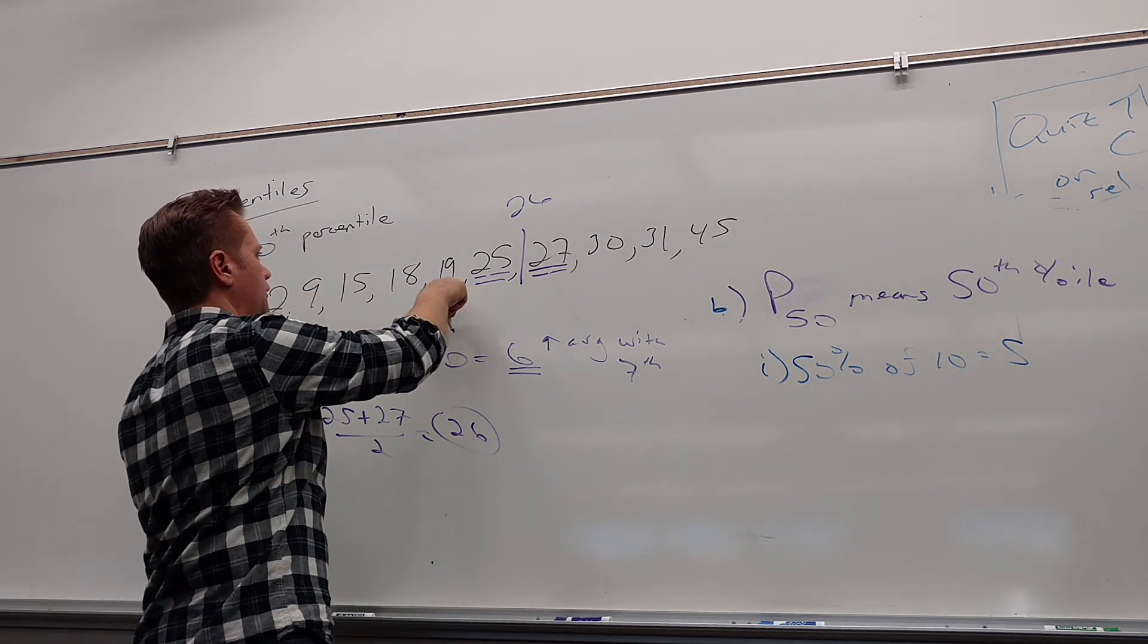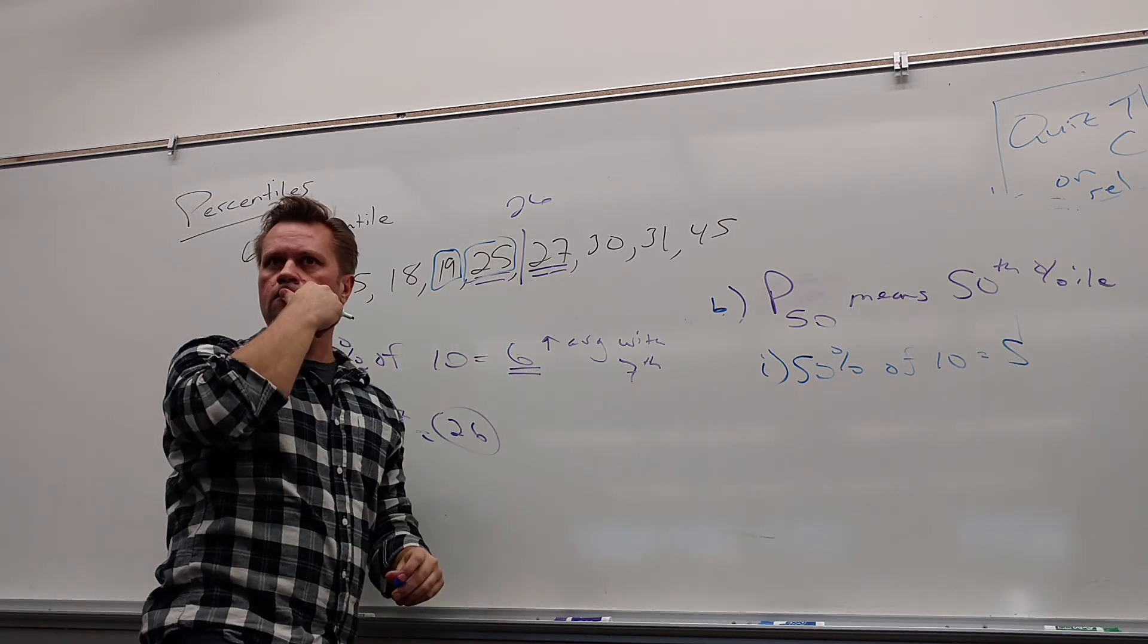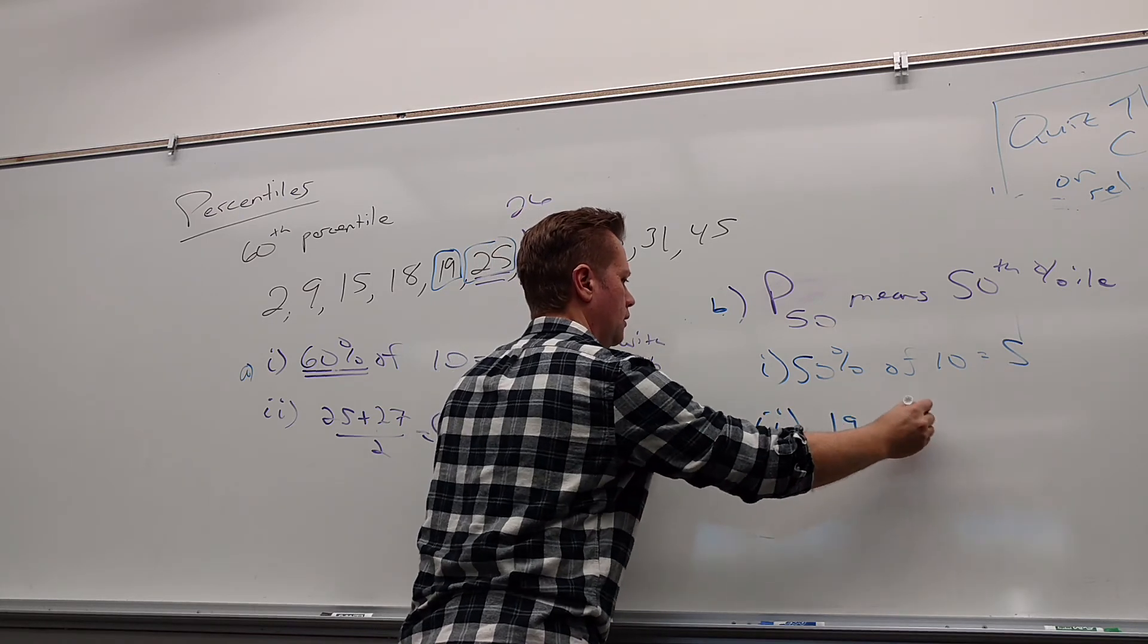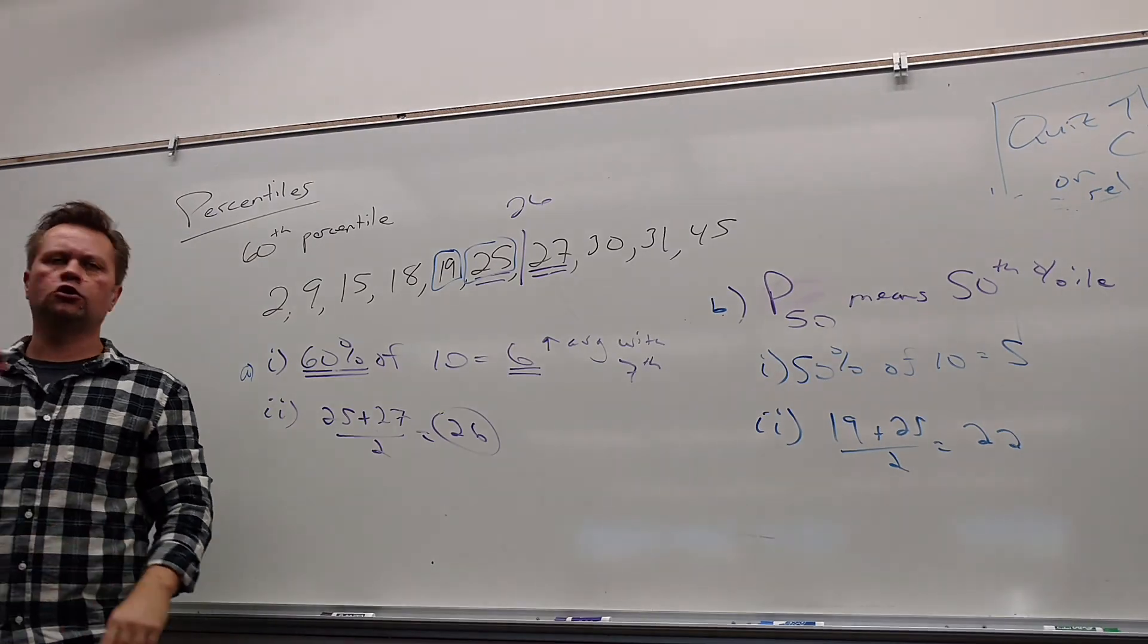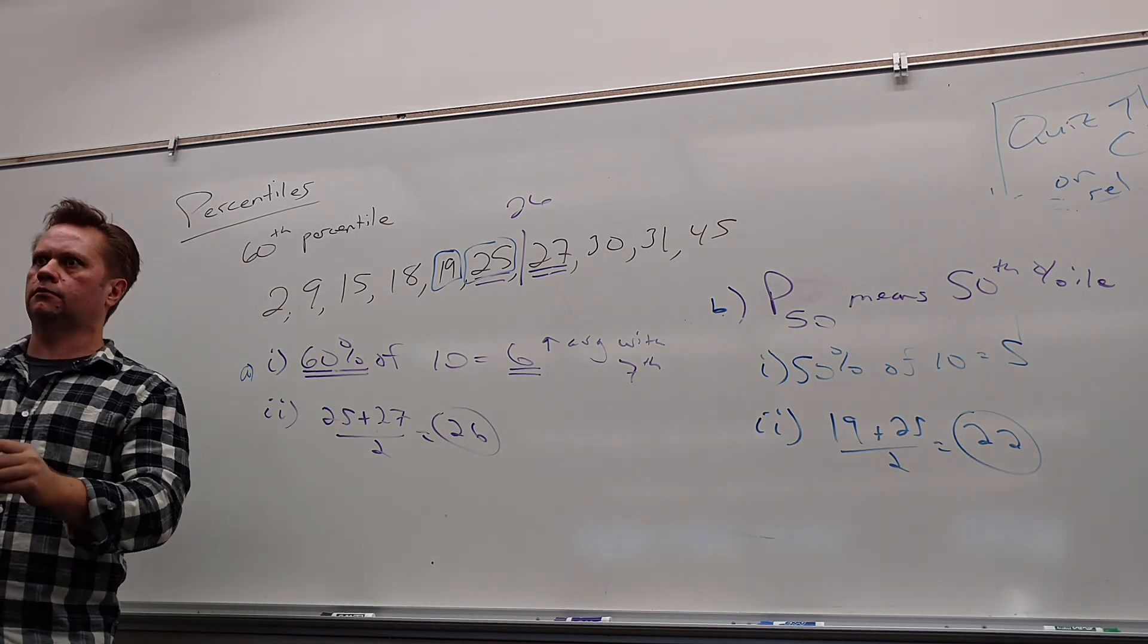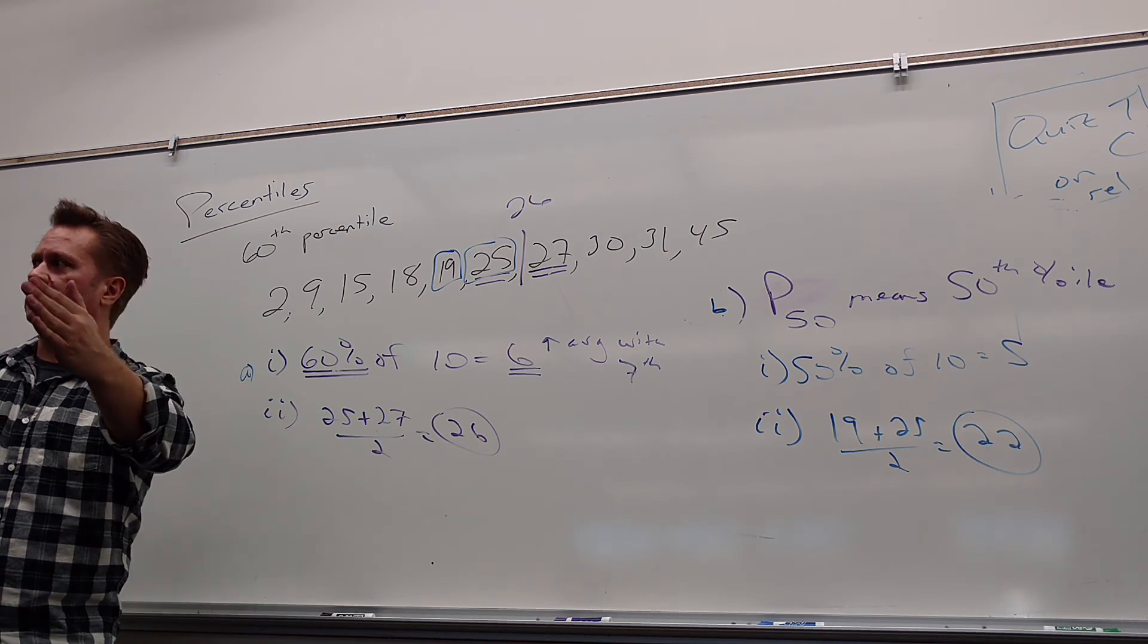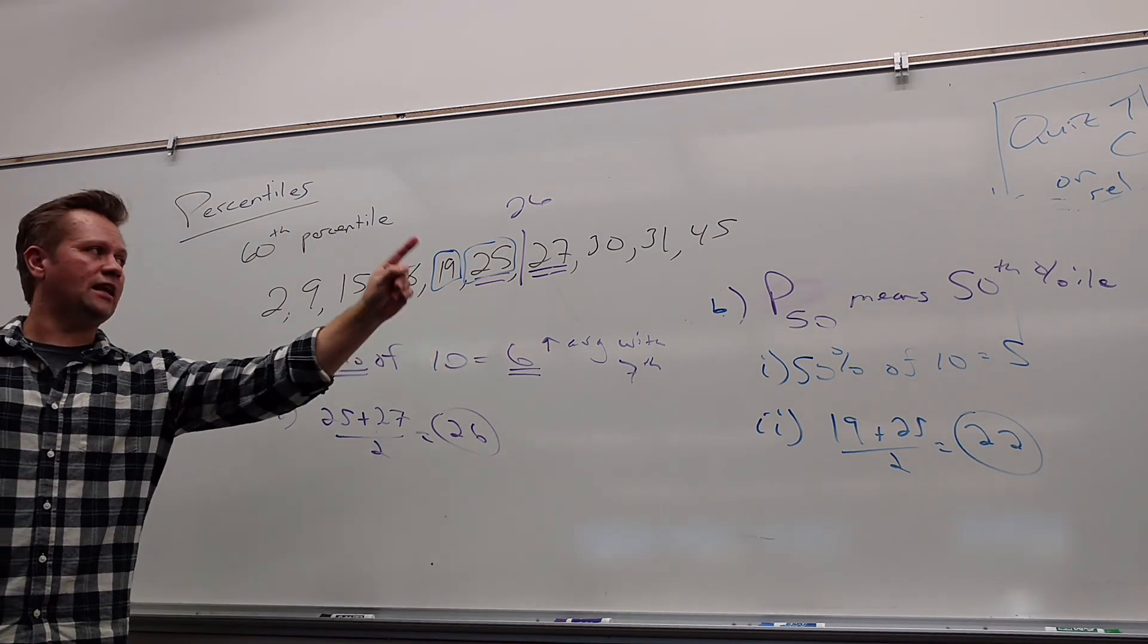I'm going to average that with 25. 22. 22, I like it. So, the second step is you average 19 and 25, get 22. So, 22 is the 50th percentile. Another name for that is the median. Because what's the median in a road? Where is it? In the middle. And 22 is dead center, isn't it? 22 is right in the middle. It's got half below and half above.